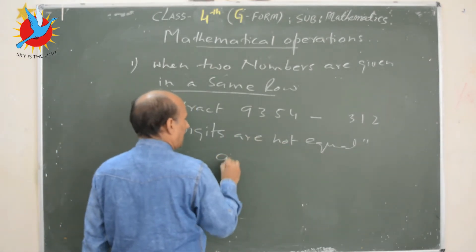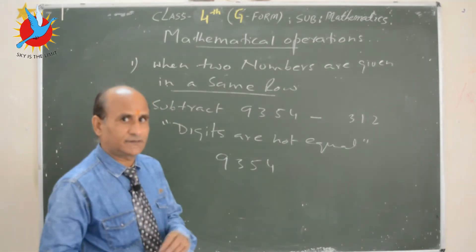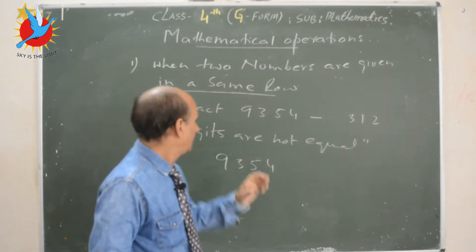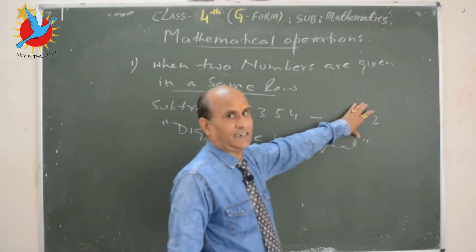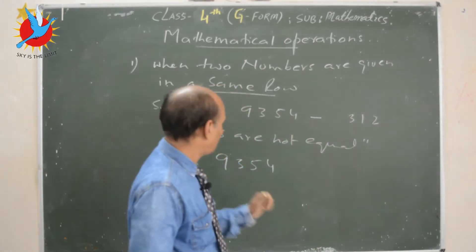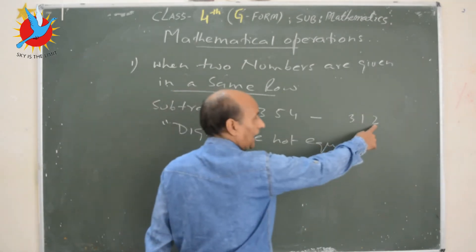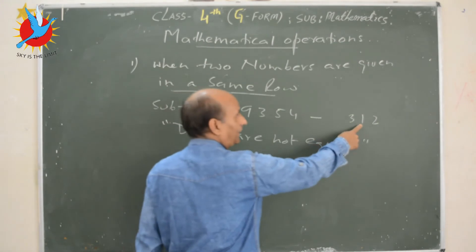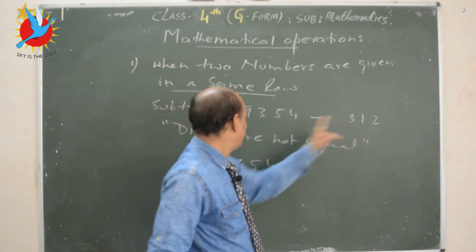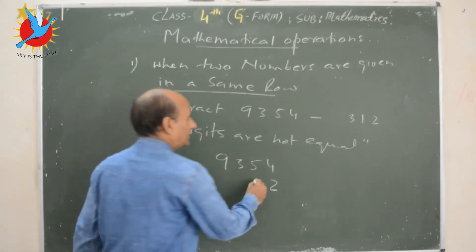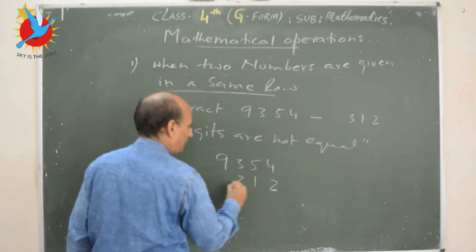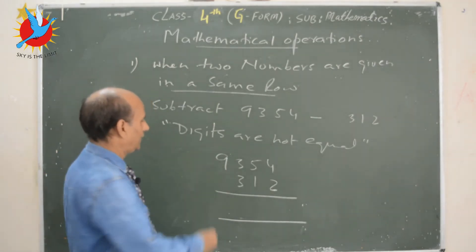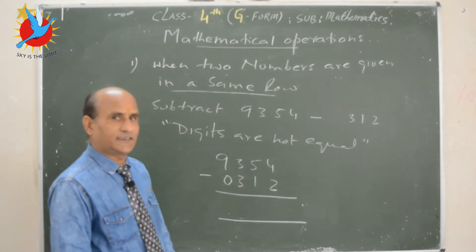First write the bigger number: 9 3 5 4. This number has 4 digits, and the second number has 3 digits. Since the digit count of the first number is greater, start writing from the right-hand side. Write the last digit of the second number just below the last digit of the first number: 2, then 1, then 3. The first place remains vacant — if you are confused, put 0 there to balance the digits.